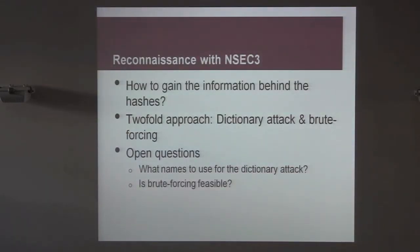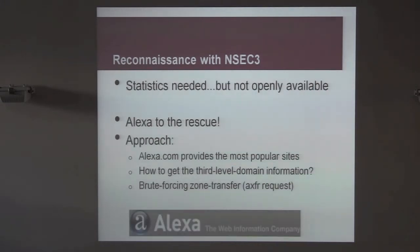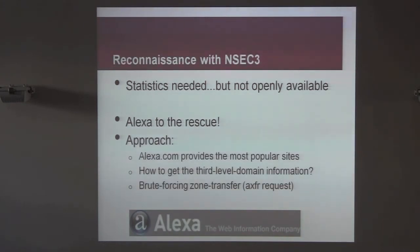We tried to exploit this by cracking those NSEC3 hashes using both a dictionary approach and brute forcing. Key questions were: what makes a good dictionary, and is brute forcing even feasible? Alexa's top million sites provided the answer for the dictionary — those sites were tried for zone transfer requests, and as it turns out, about 5.5% of those one million websites still have AXFR enabled.